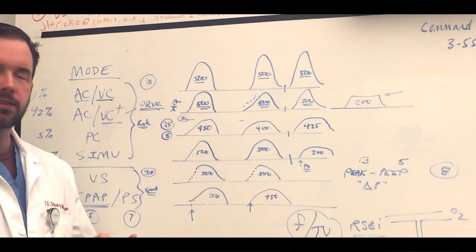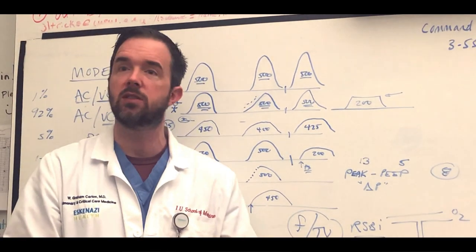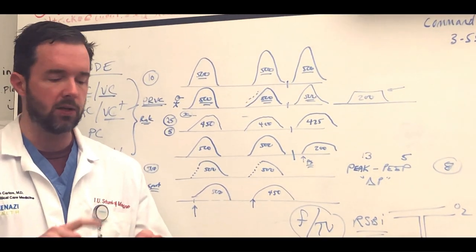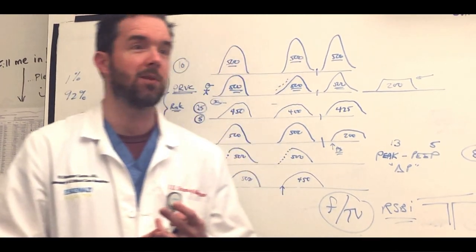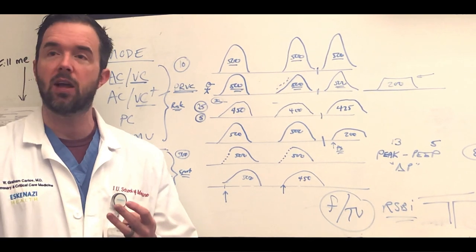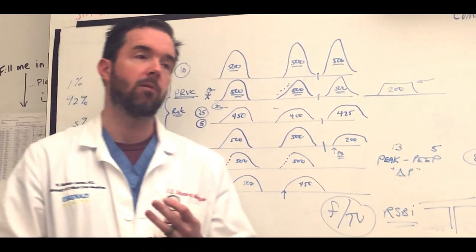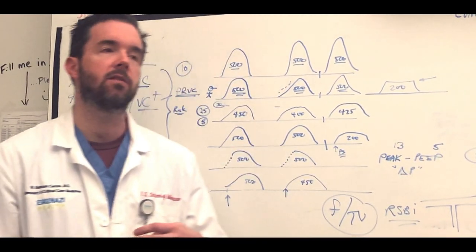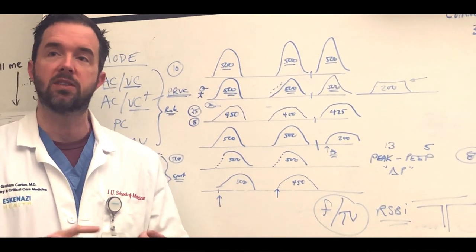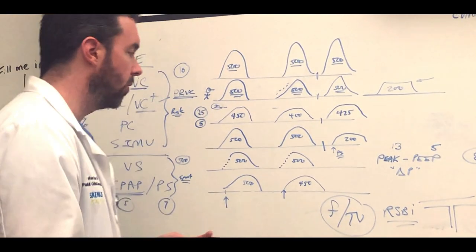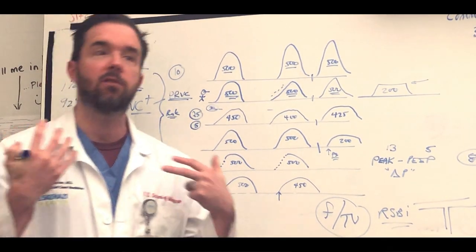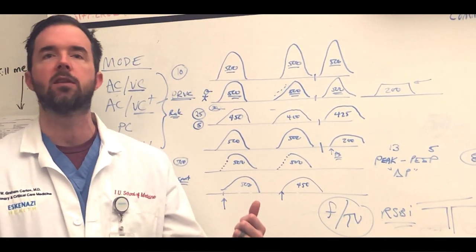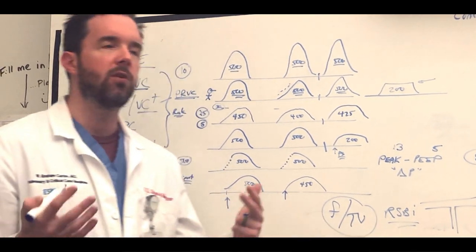In addition to checking their RSBI as you get ready to land the plane and extubate the patient, we want to ask about secretions. Are there lots of secretions? That doesn't bode well for extubation. How are their hemodynamics? If they're in AFib with RVR, it's not the time to extubate them. Is the underlying problem better? Whatever it was, ARDS, their PE, whatever it was that you were intubating them for, is that improved? That's another important question to ask. And then, can the patient protect their airway? Can they lift their head off the bed or follow commands? If they meet those five things, we're feeling pretty good about extubation.